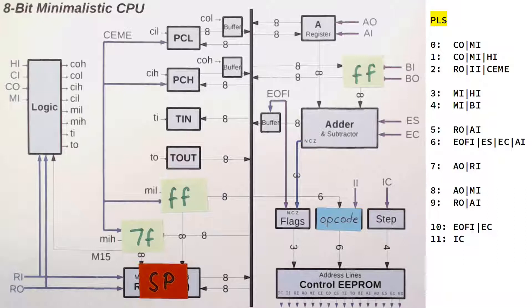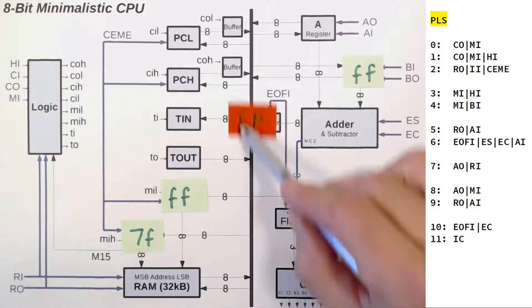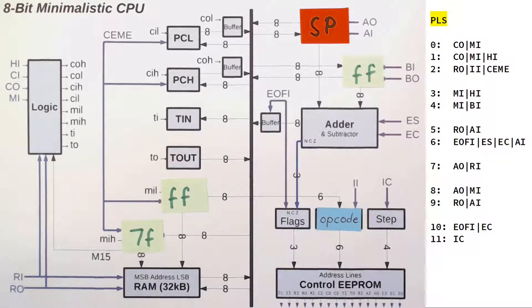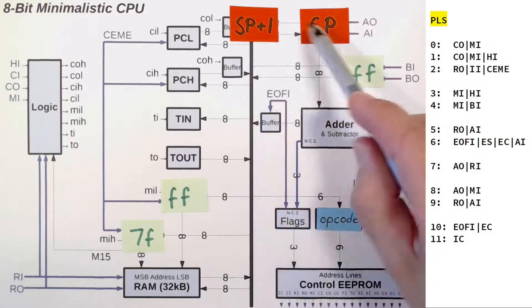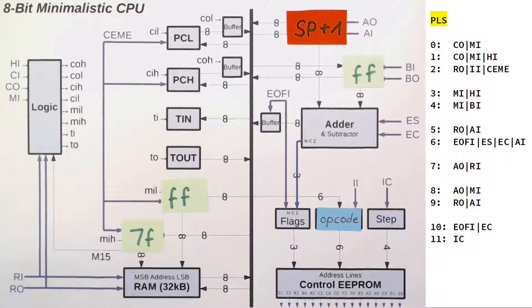Step number 5 RAM out A in just moves the stack pointer into A. Step number 6 now increments A since we first invert B from FF to 00 and then add the carry-in flag. So our result, stack pointer plus 1, is stored into our A register.